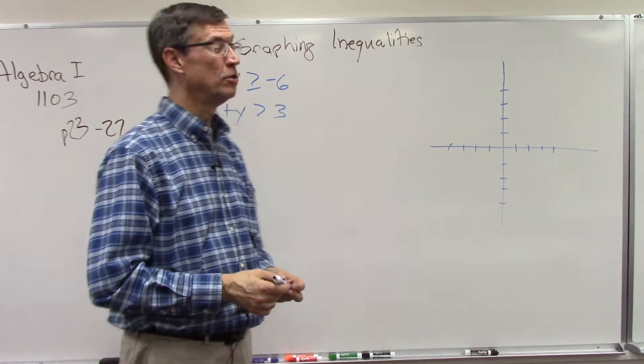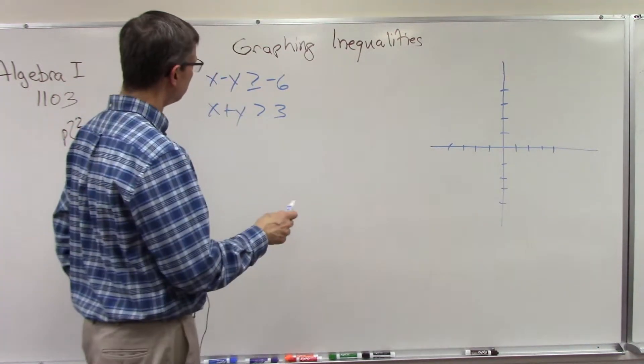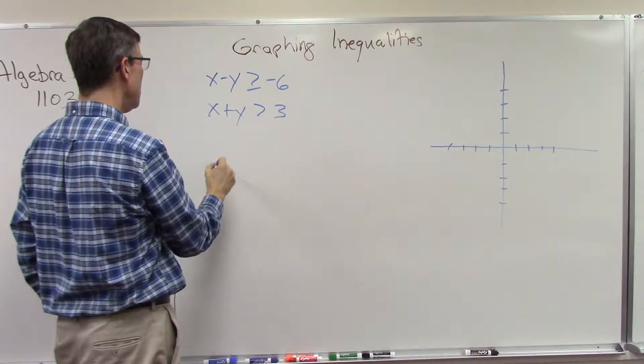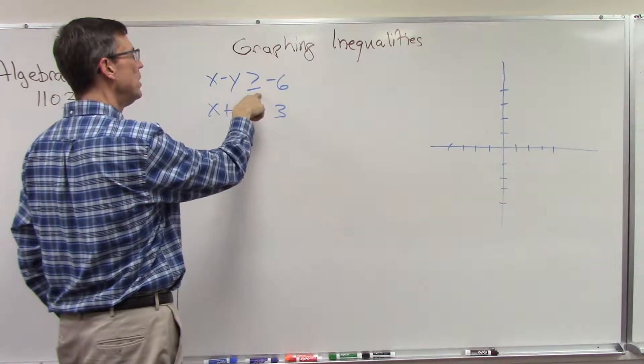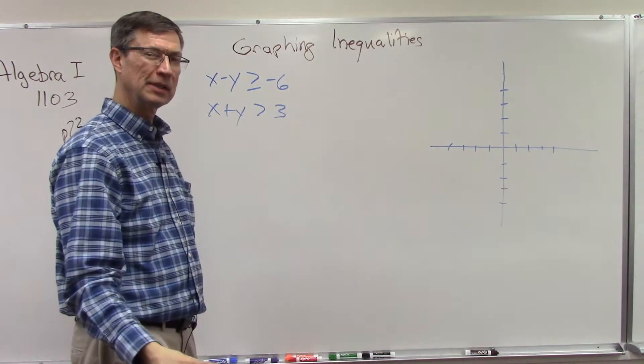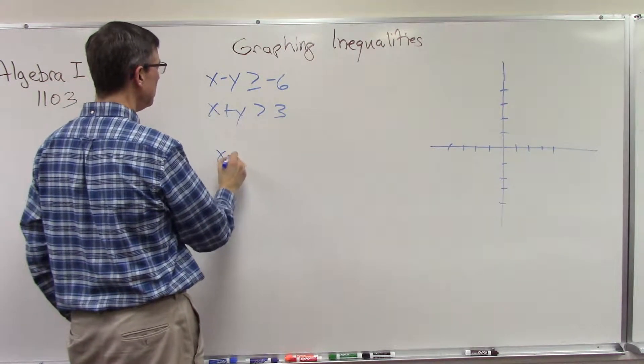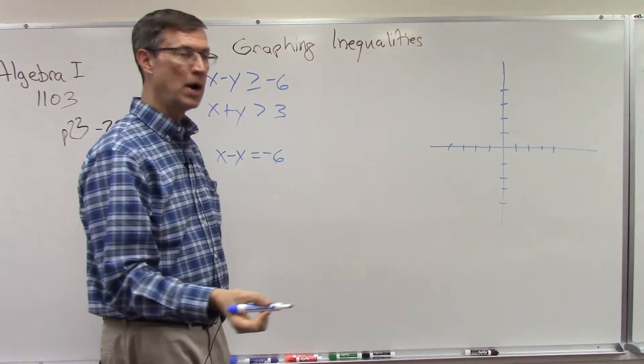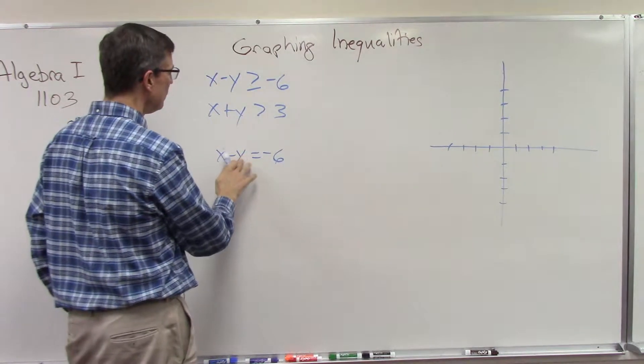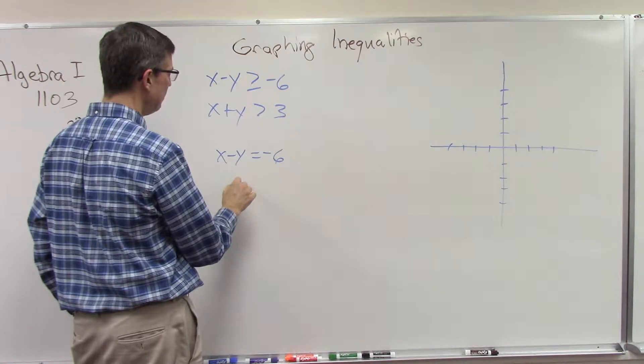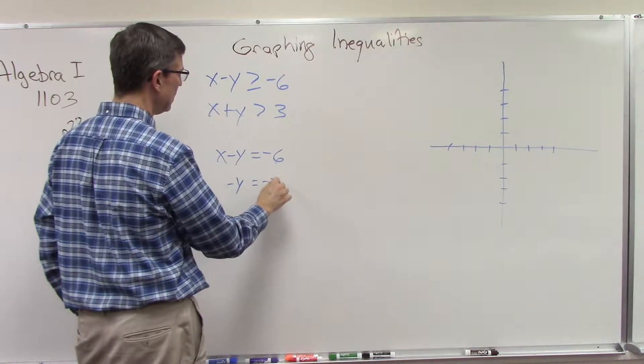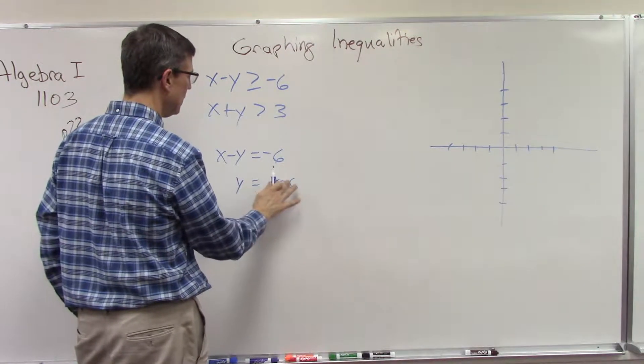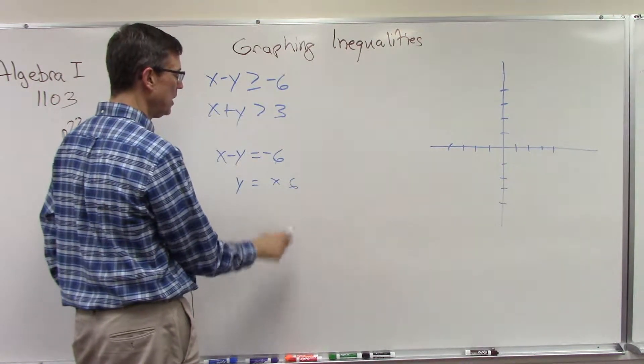Let's take this equation x minus y, and notice it says is greater than or equal to negative 6. Now if I had x minus y equals negative 6 and I were to graph that line, then I would solve. So I get negative y equals negative x minus 6. Divide everything by negative 1, so y equals x plus 6.